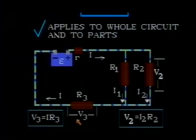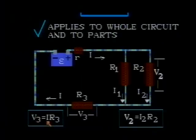The voltage drop across resistor R3, V3, is equal to I, the current through it, times R3.